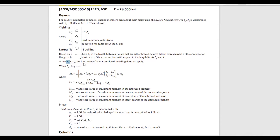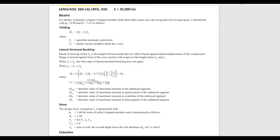Lp is the limit state of lateral torsional buckling. You need to know that if Lb is less than or equal to Lp, then lateral torsional buckling does not apply. But if the unbraced length is between Lp and Lr, then lateral torsional buckling does apply and you must use this formula. So the next step is to check what Lp and Lr are for our beam.